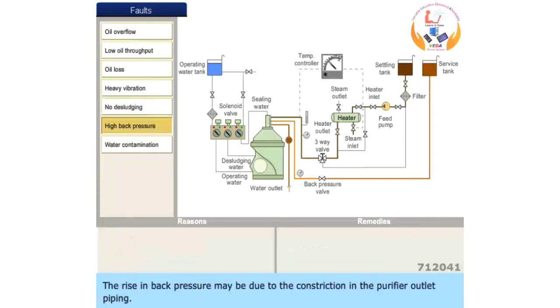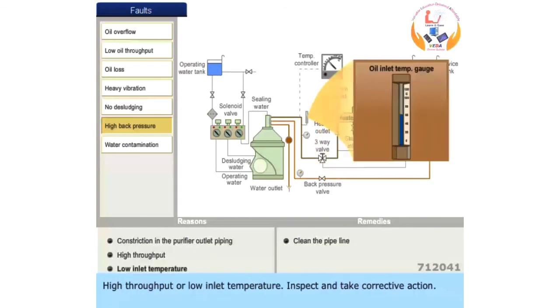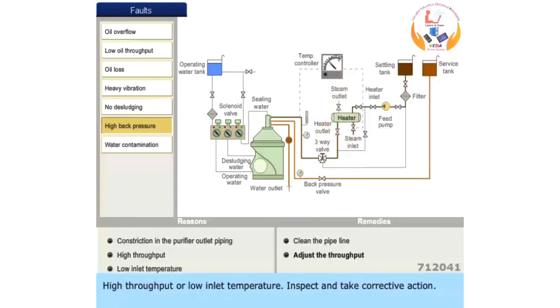The rise in back pressure may be due to constriction in the purifier outlet piping, high throughput, or low inlet temperature. Inspect and take corrective action.